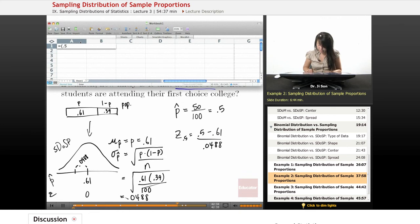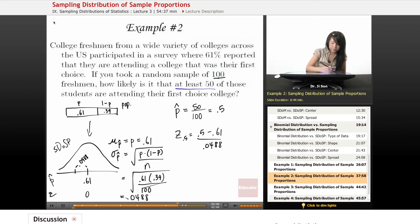So 0.5 minus 0.61 divided by 0.0488. So we get negative 2.25. So here, we're somewhere like this. Negative 2.25.